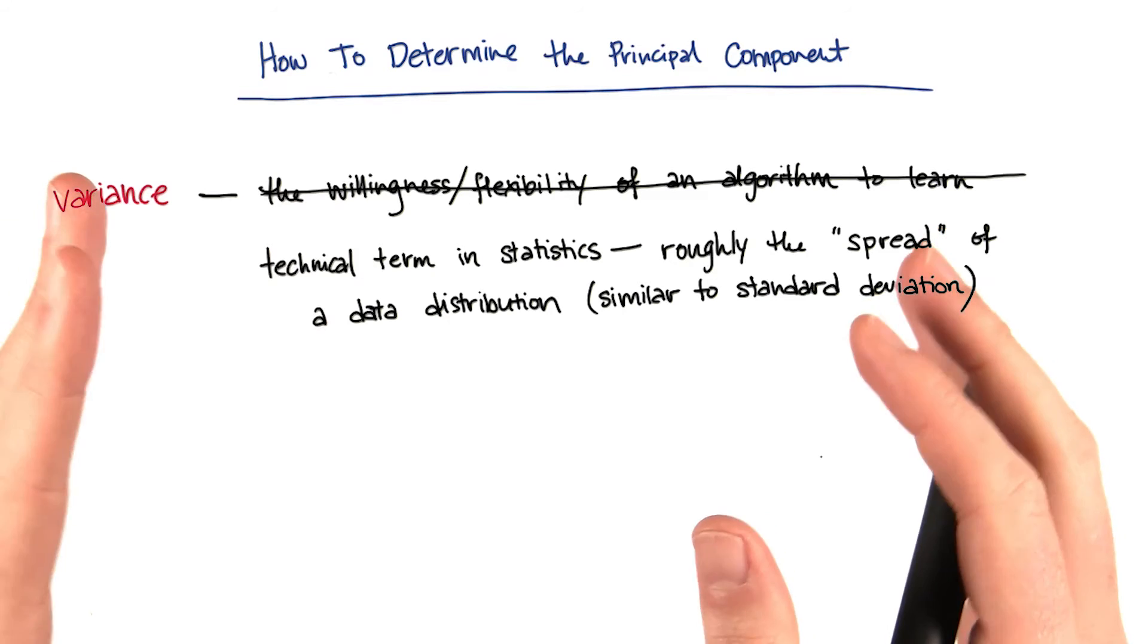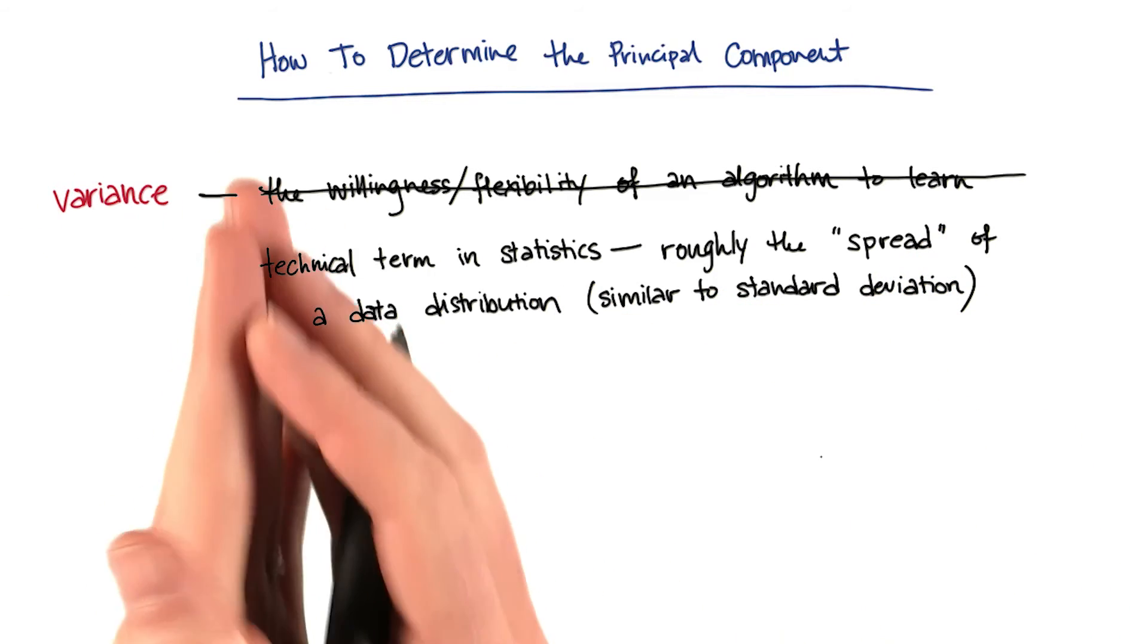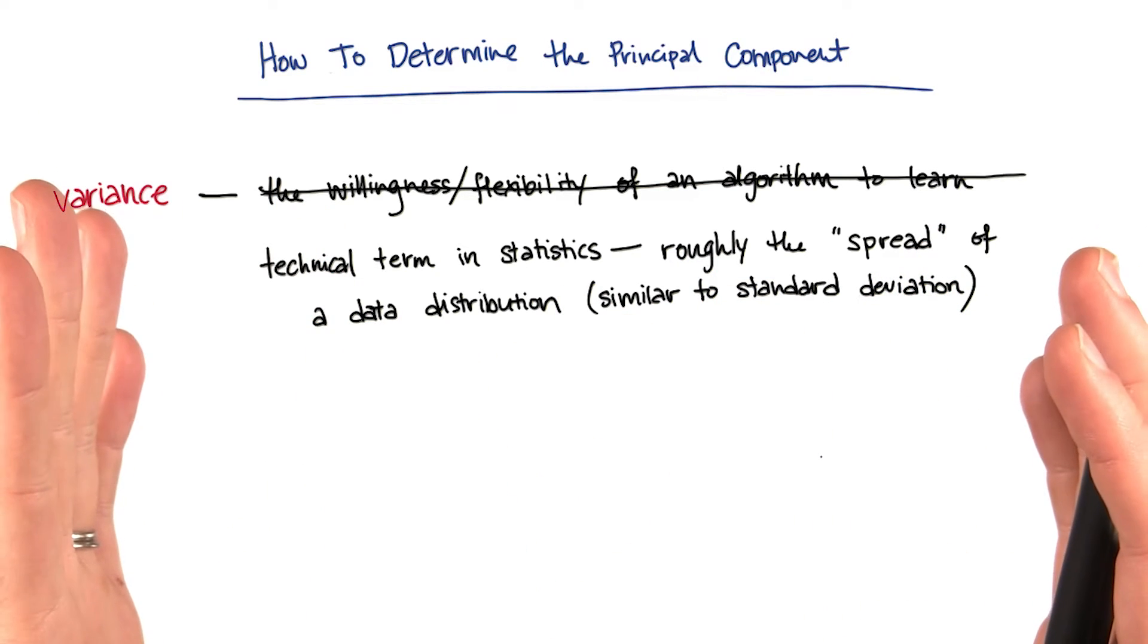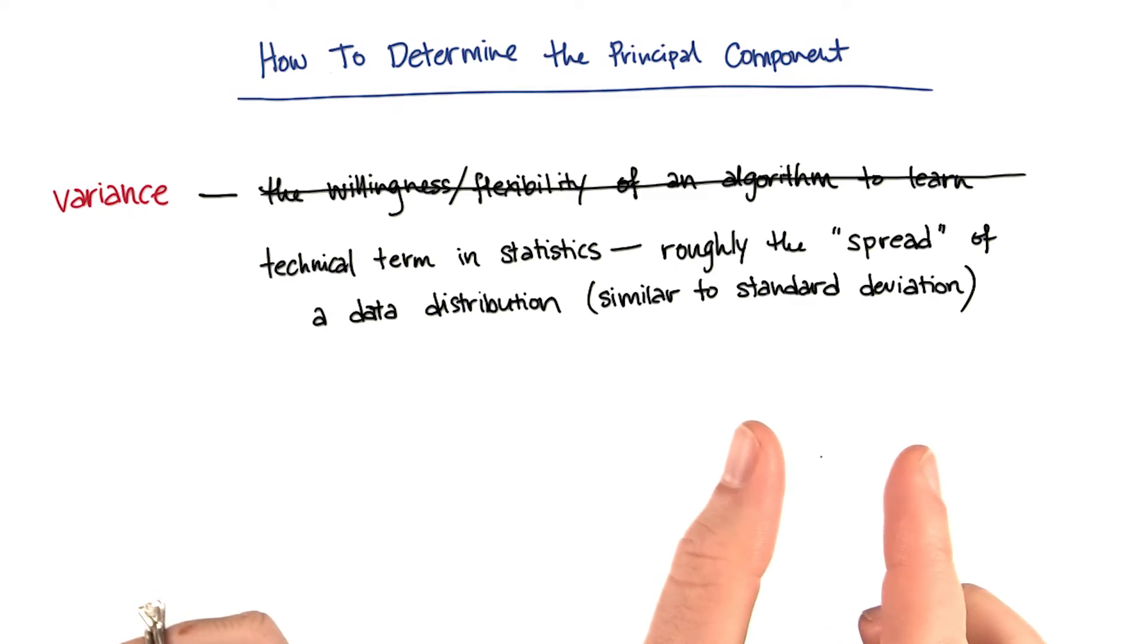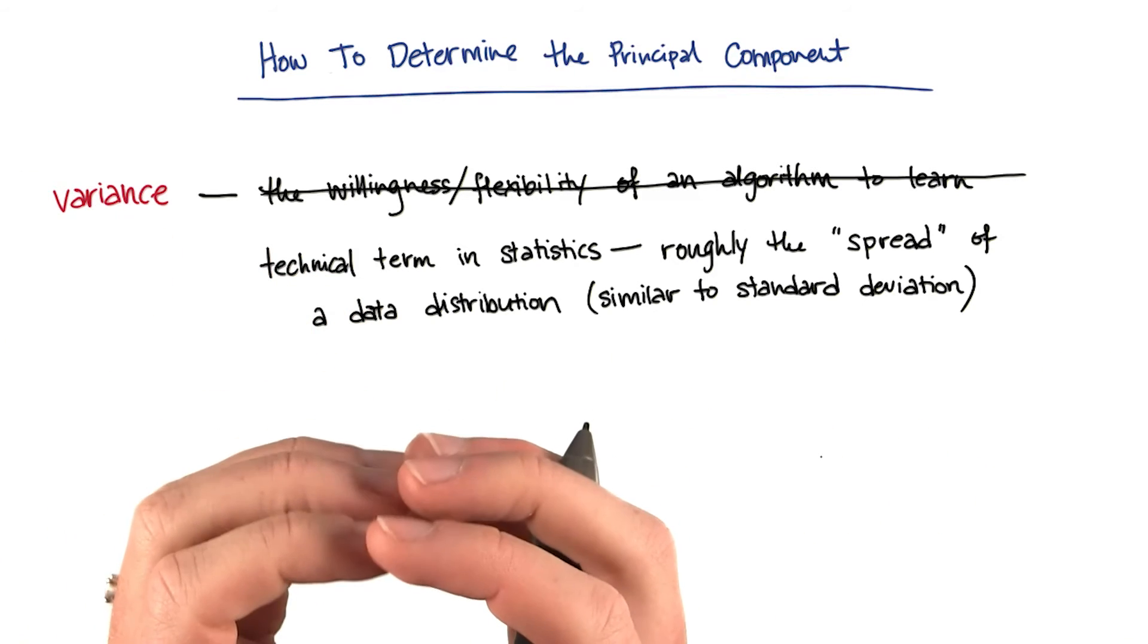So a feature that has a large variance has instances that fall over a very large numerical range of values that it can take. Whereas something with a small variance means that the features tend to be more clustered together tightly.